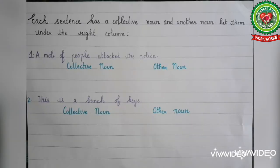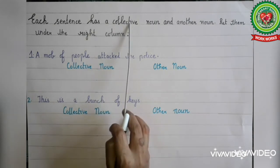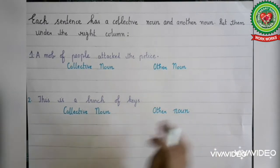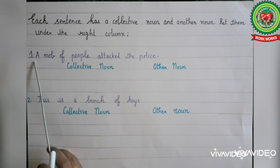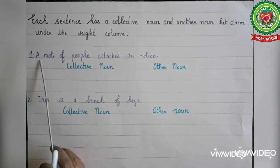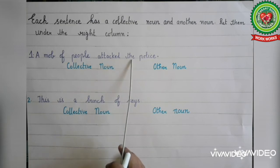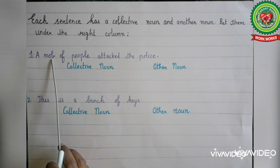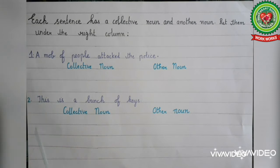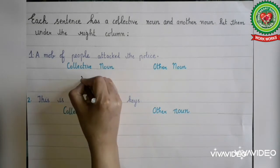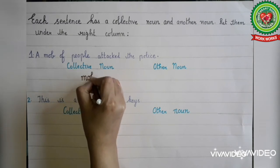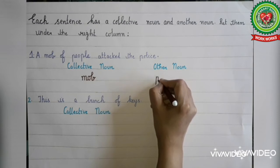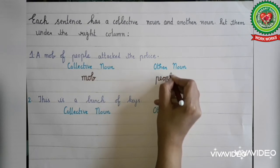Now we will do some exercises related to collective nouns. In this exercise each sentence has a collective noun and another noun. We have to put them under the right column. Number one, read the sentence carefully: a mob of people attacked the police. The word mob stands for the collection of people and is therefore a collective noun. So we will write mob under collective noun and people under the other noun column.